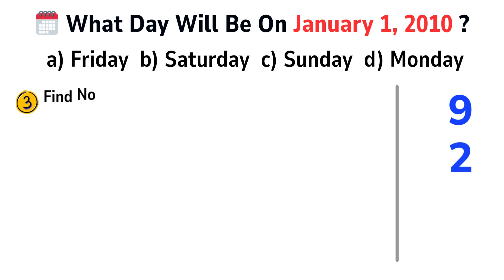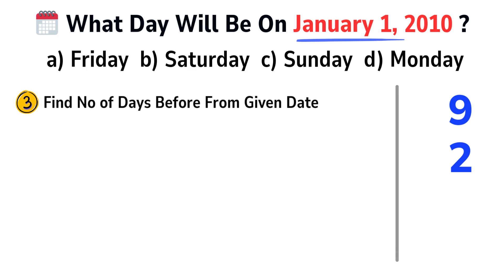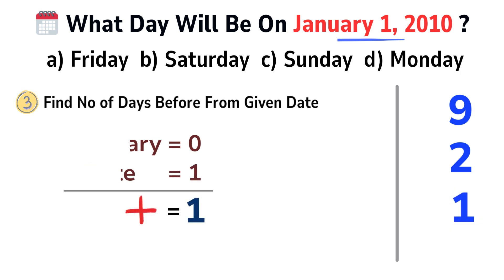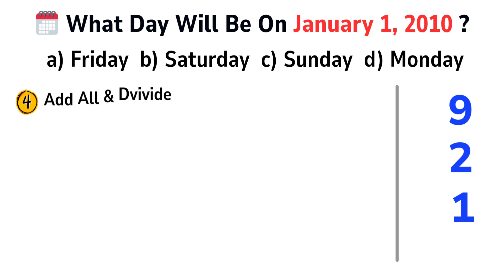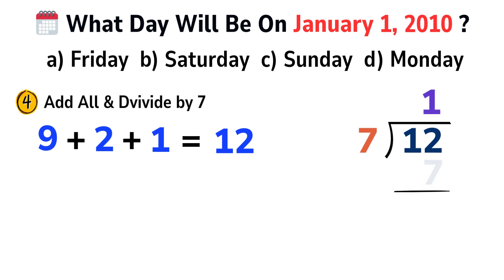Step 3: Add the days of the months before the given month, starting from January, then add the date. In our example, it is 1st January. Days before January equals 0, and the date equals 1. Step 4: Add everything together and divide by 7. 9 plus 2 plus 1 equals 12. Divide 12 by 7 — because a week has 7 days. 7 goes into 12 once with remainder 5.